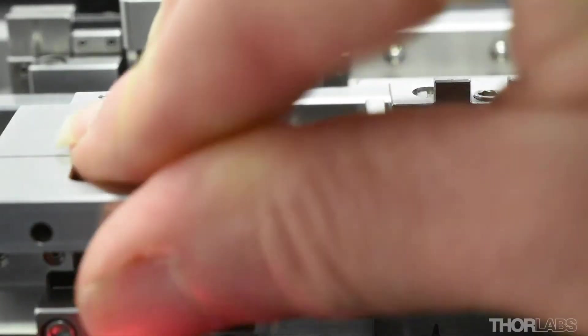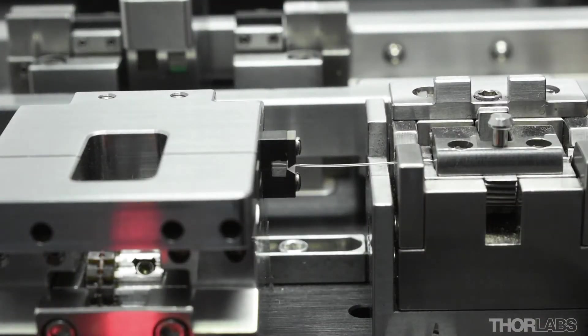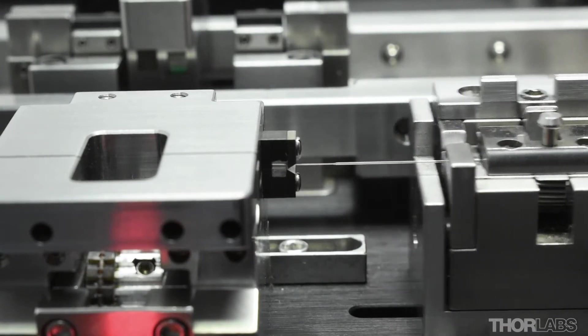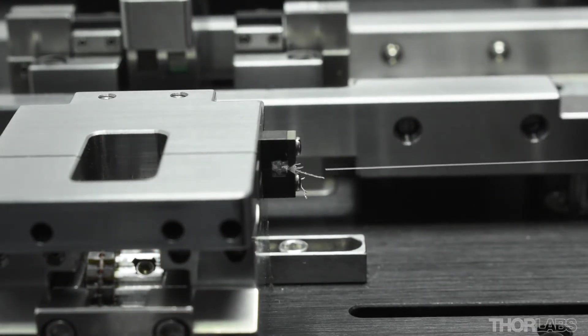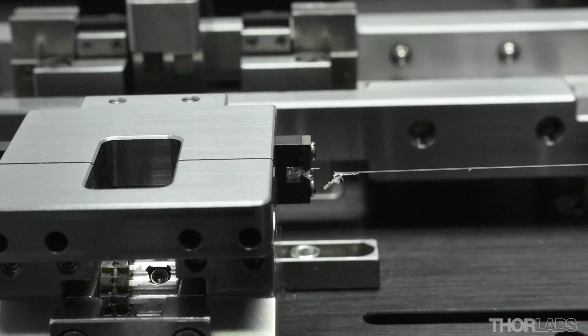The thermo-mechanical stripping process should remove most of the fibre coating, but in some cases there may still be some debris attached to the fibre. This is no cause for concern as it will be removed by cleaning the fibre.